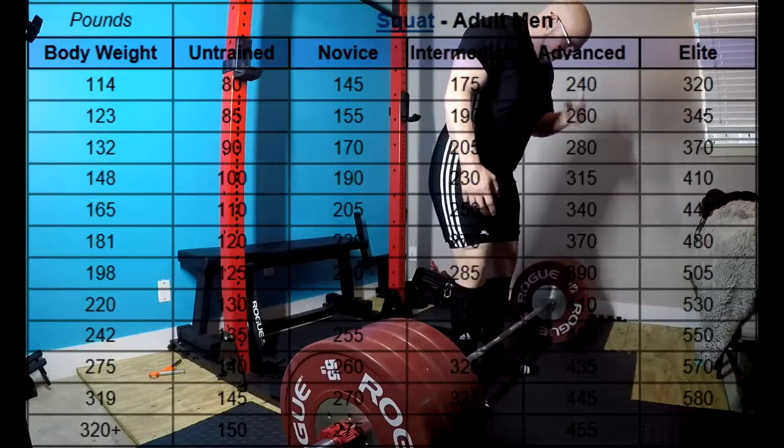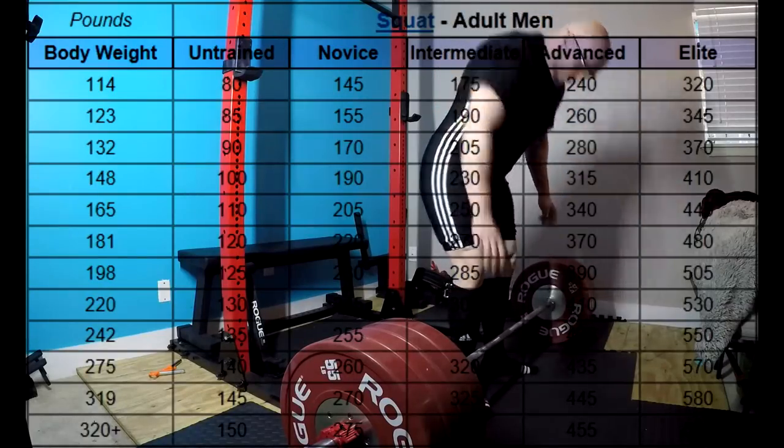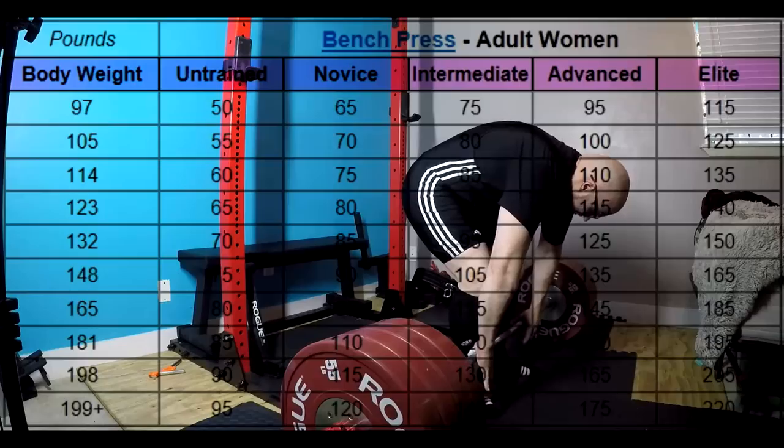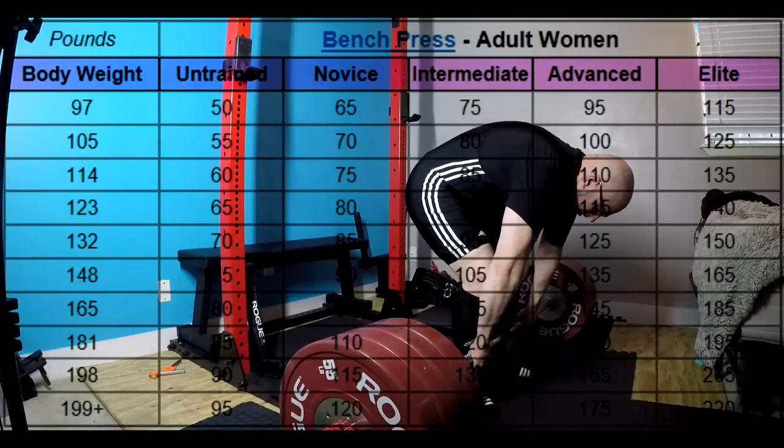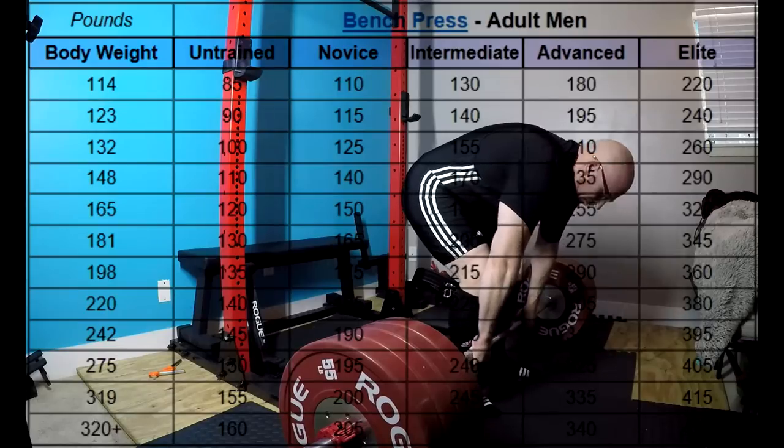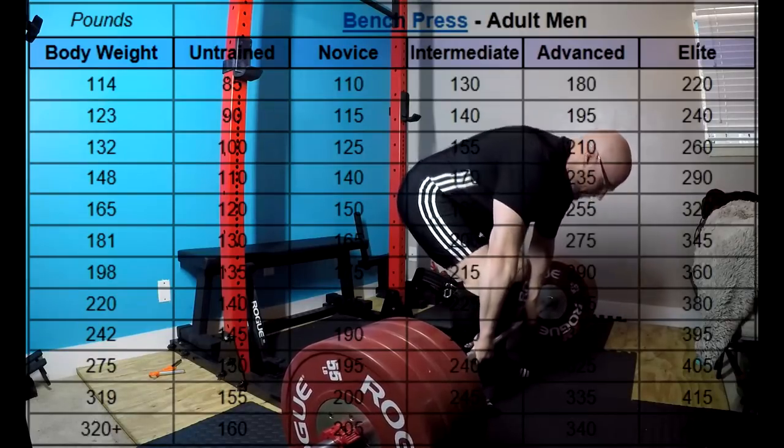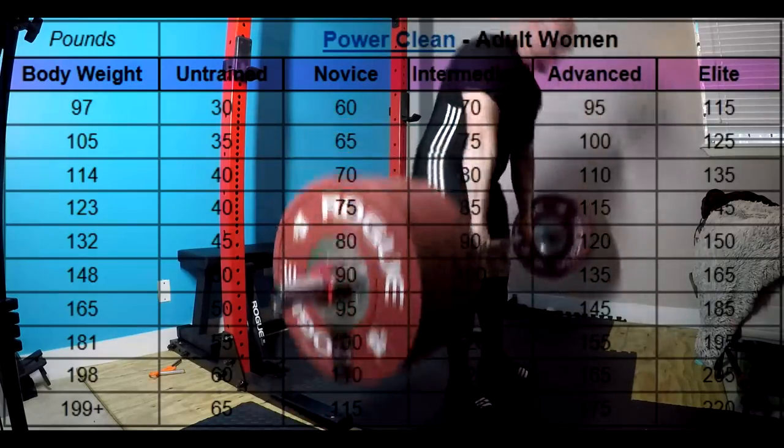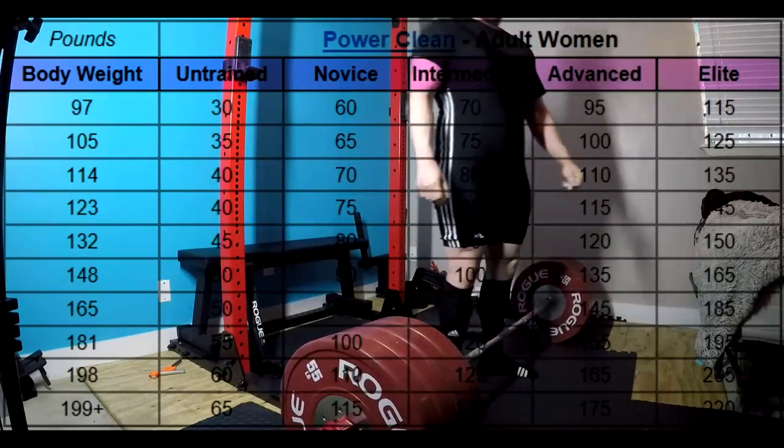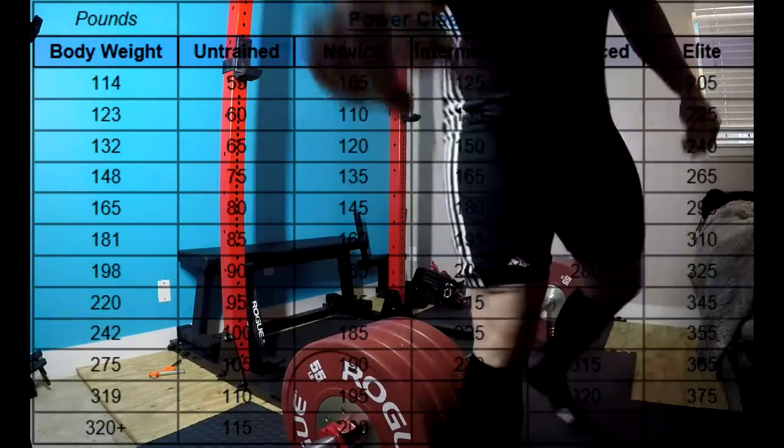And these charts also assume, just like any sort of strength sport, that you actually train your entire body. I mean, because some people be like, well, how come I'm advanced on the bench press, but I'm still intermediate, or I'm elite on the bench press, but I'm an intermediate on the squat and deadlift. It's like, well, because you don't train your legs. And had you trained your legs, you would be 10 pounds heavier. You'd be 10 pounds heavier.